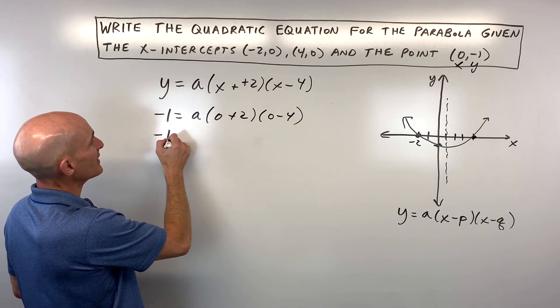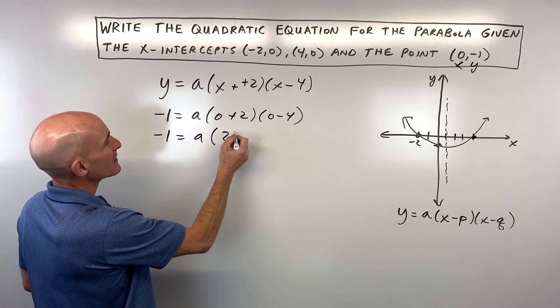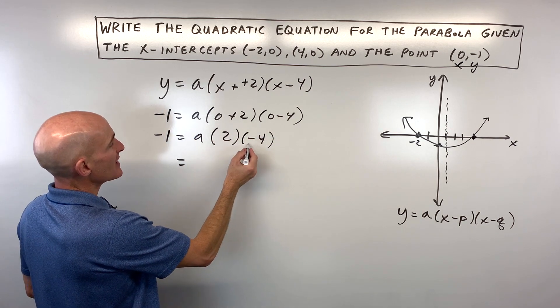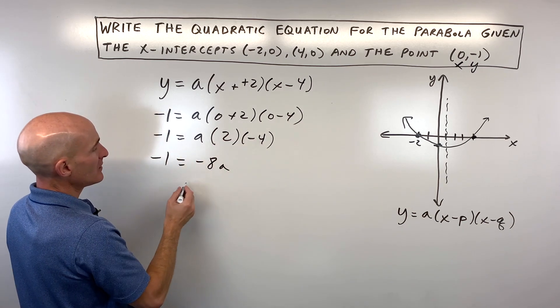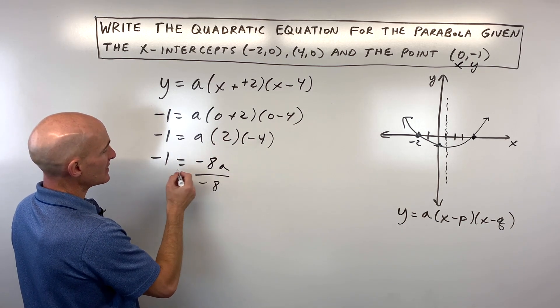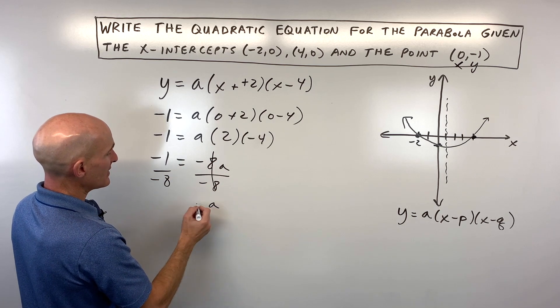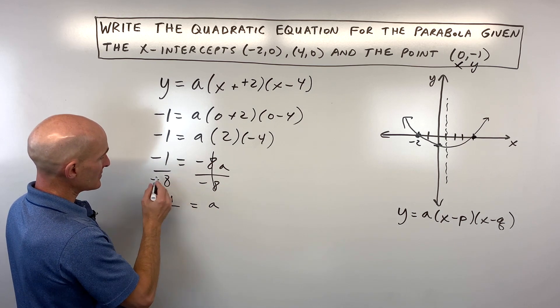So this is going to come out to, let's see, negative 1 equals a times 2 times negative 4, which this is negative 8 times a. Divide both sides by negative 8 to get the a by itself. And you can see that a is coming out to positive 1 eighth because the two negatives cancel.